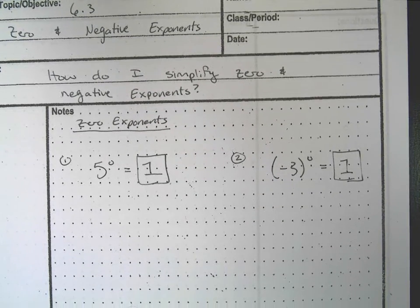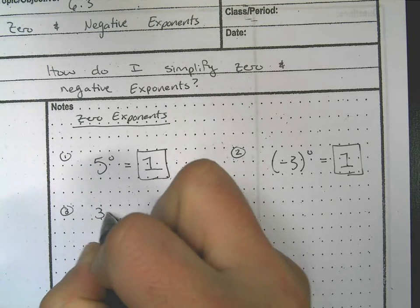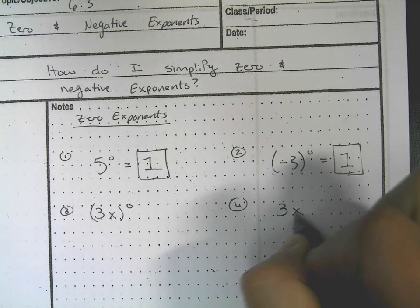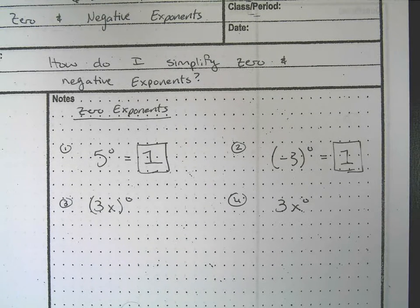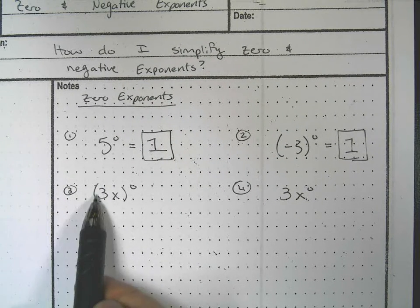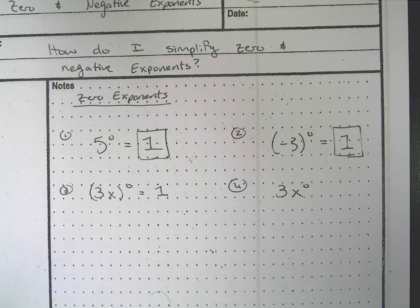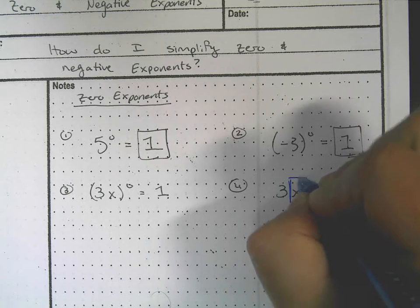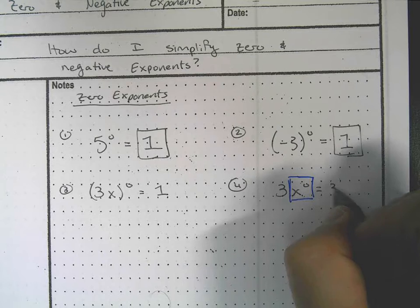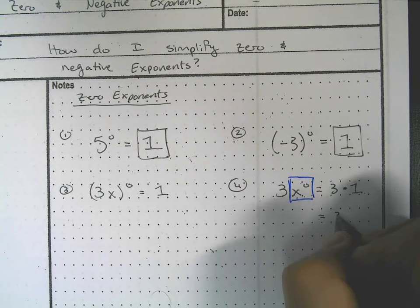The location of the parentheses is very important. Say I had (3x) to the zero versus 3x to the zero. For the first problem, the three and the x together are both being raised to the zero power, so that equals one. On the second, only the x is being raised to zero, so it becomes three times one, which equals three.